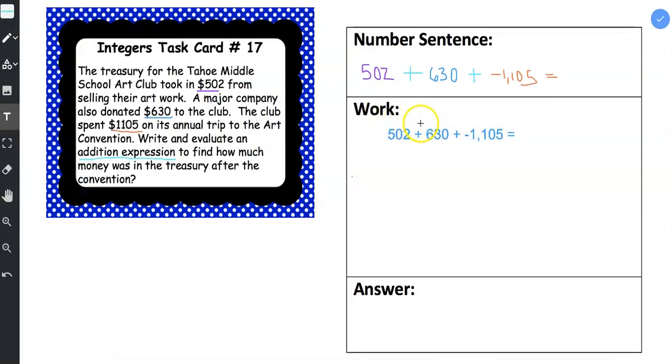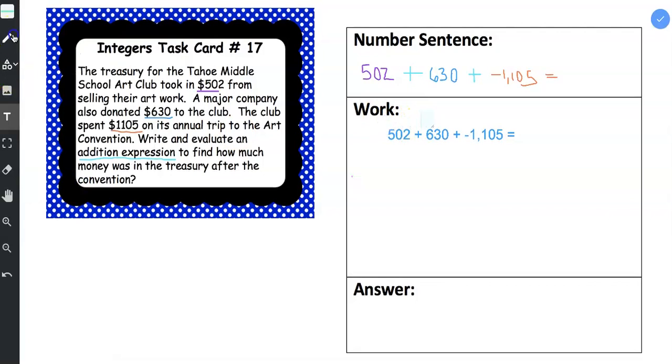So let's start with this first part, the $502 plus $630. So $630 plus $502. We get a 2 here, a 3, and then an 11. So this is equal to $1,132.